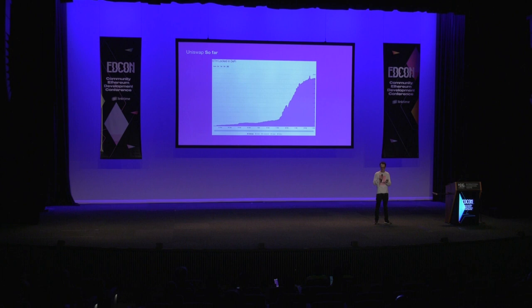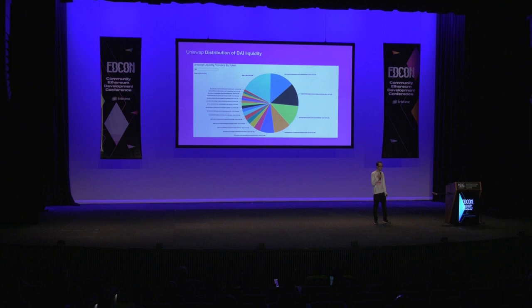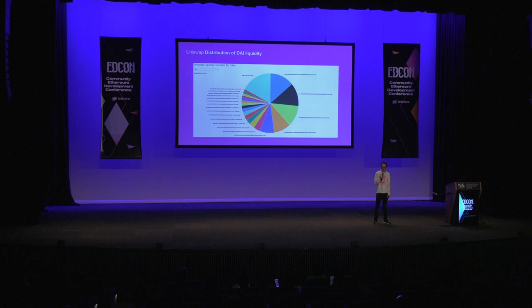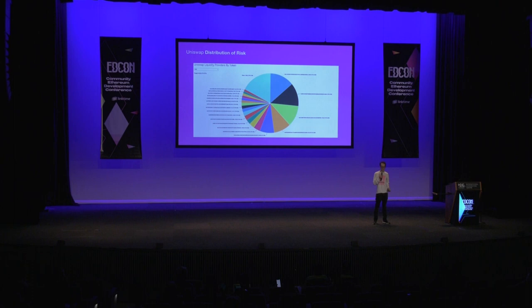This shows the growth of the liquidity pool — still going up. You might think that $10 million all came from a few people, but this is the distribution of the DAI liquidity pool. About 25% of the DAI liquidity pool, which has $2 million in it, comes from people who put in less than 1%. The largest single liquidity provider is 14% of the pool — so it's very well distributed.